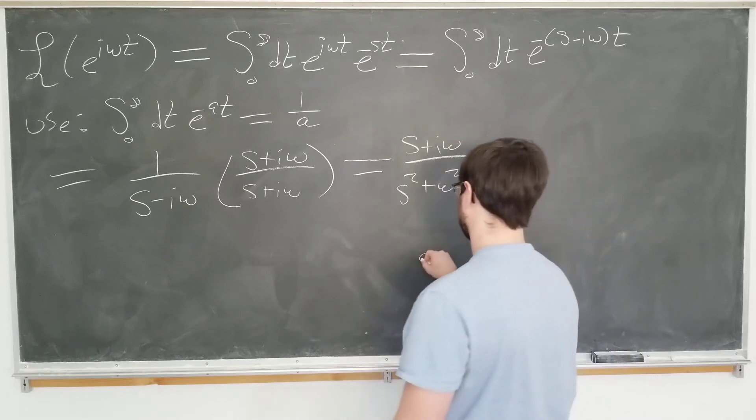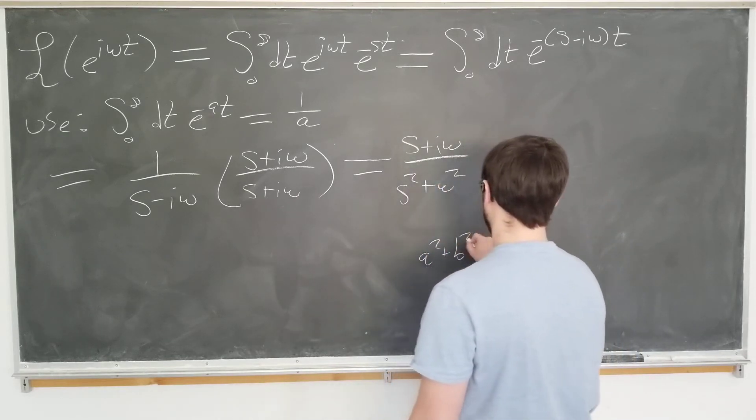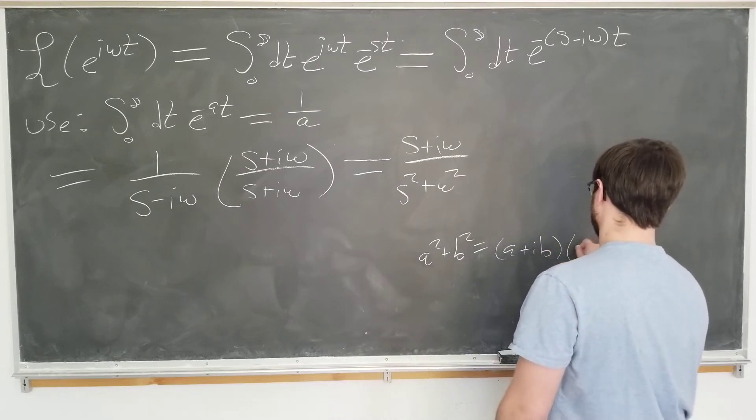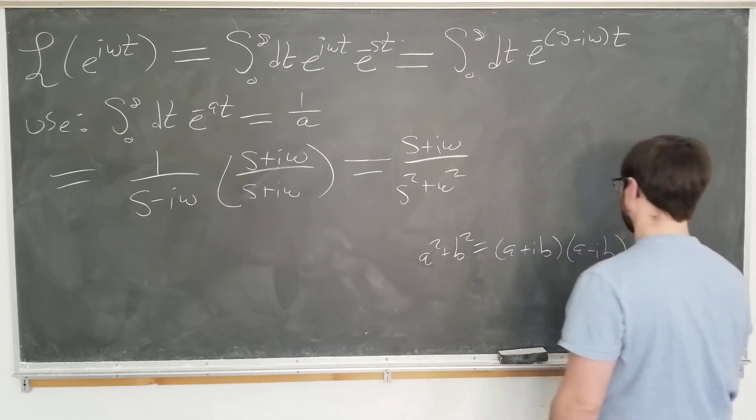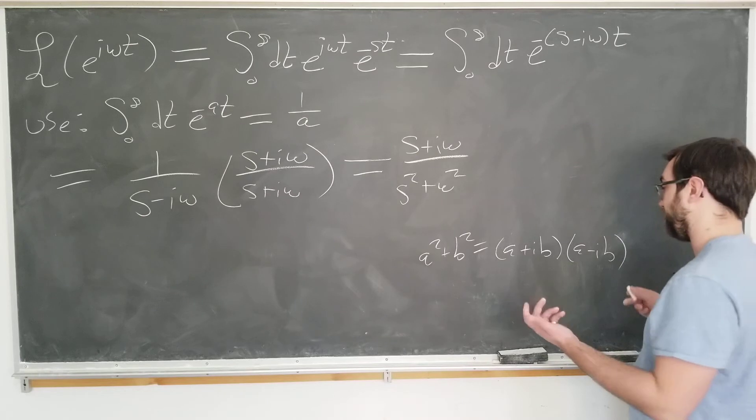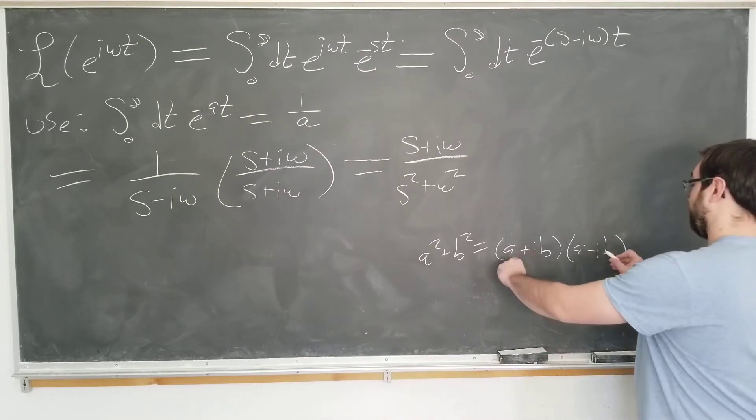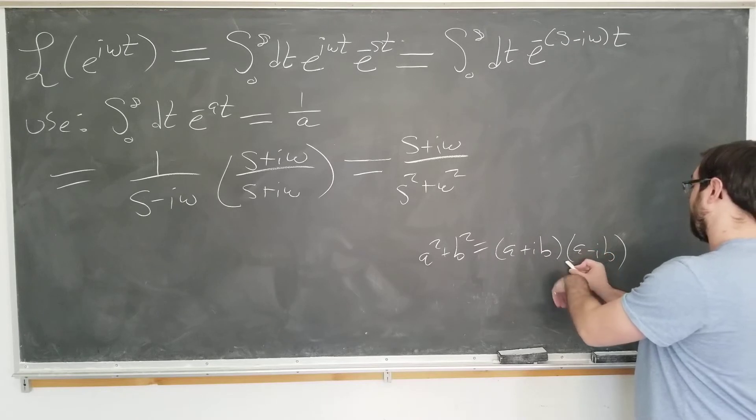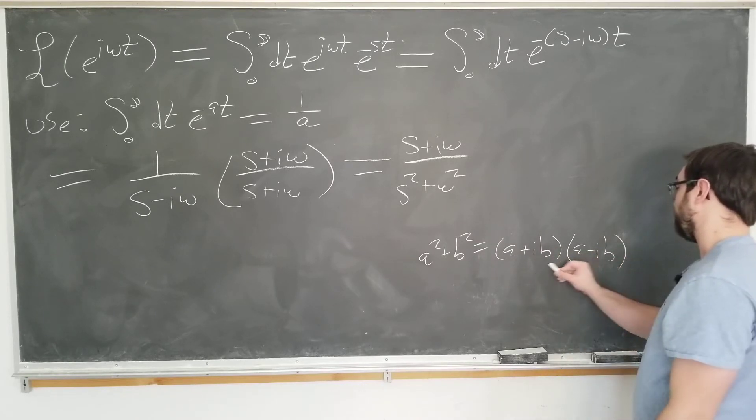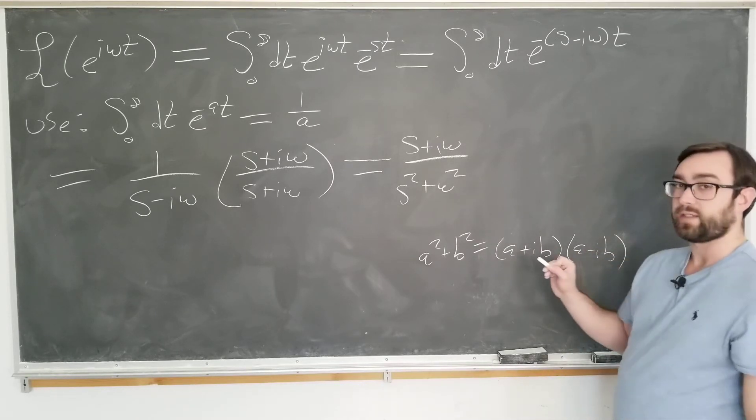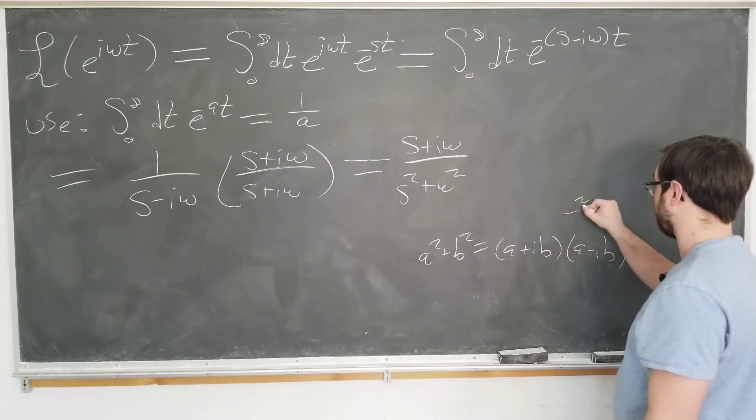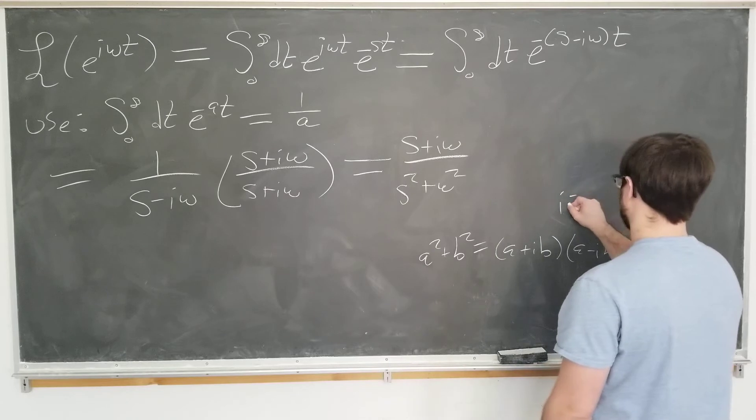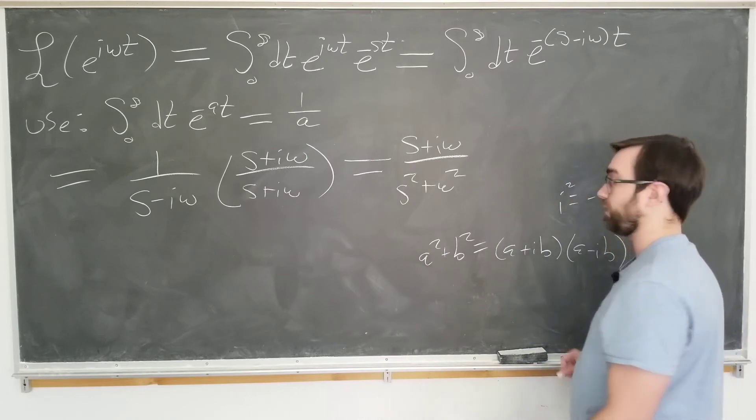It's pretty obvious: a squared plus b squared is equal to a plus i b times a minus i b. Feel free to check it out for yourself if you don't believe me. We got a squared minus a i b plus a i b minus i squared b squared, and i squared is negative 1 of course. That's how we got that.